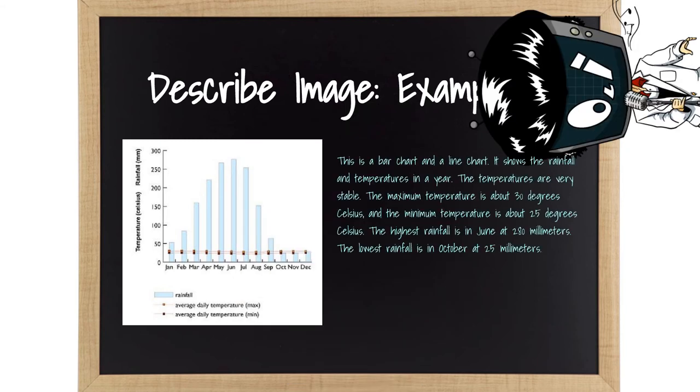Here is the baby version. This is a bar chart and a line chart. It shows the rainfall and temperatures in a year. The temperatures are very stable. The maximum temperature is about 30 degrees Celsius, and the minimum temperature is about 25 degrees Celsius. The highest rainfall is in June and 280 millimeters. The lowest rainfall is in October at 25 millimeters.